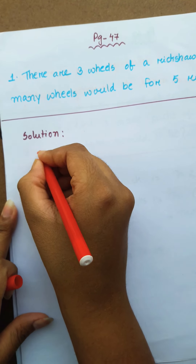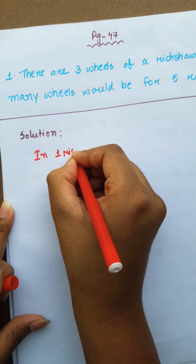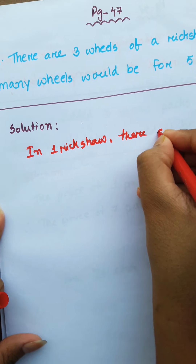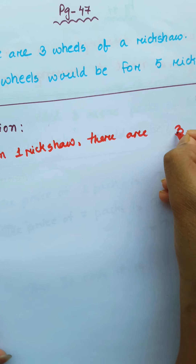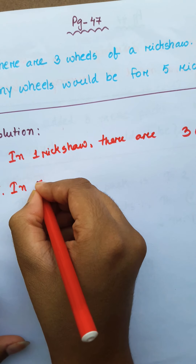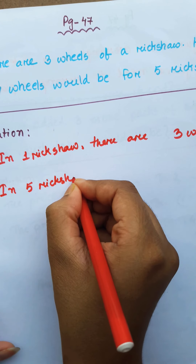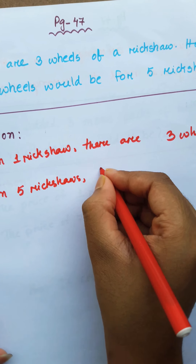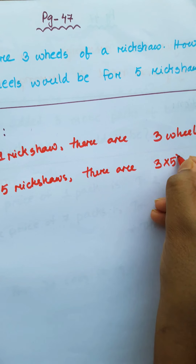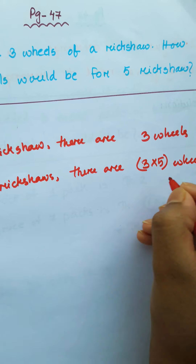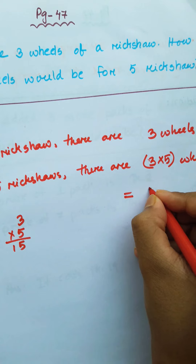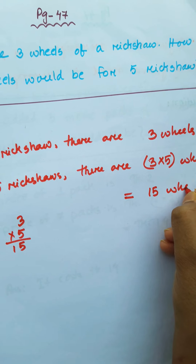There are 5 rickshaws. Therefore, in 5 rickshaws, there are 3 into 5 wheels. 3 into 5 is 15. So, 15 wheels.